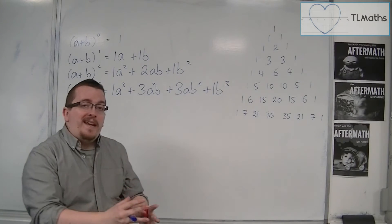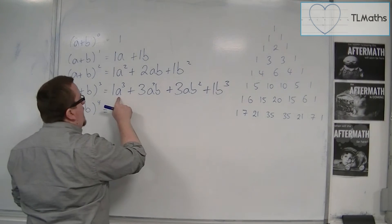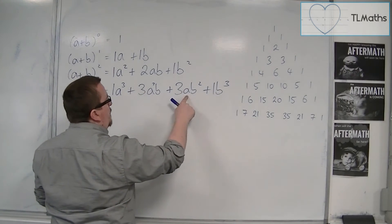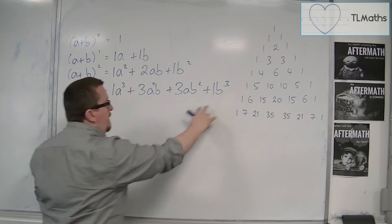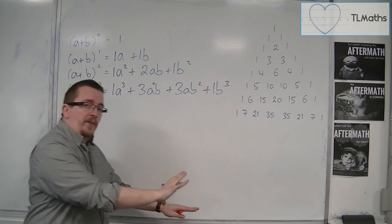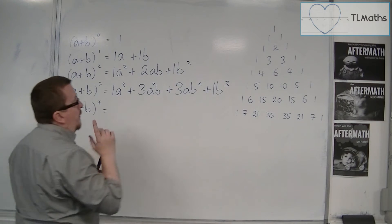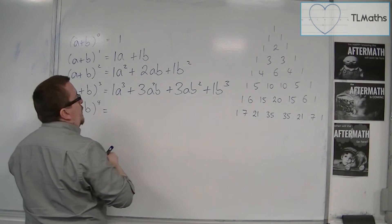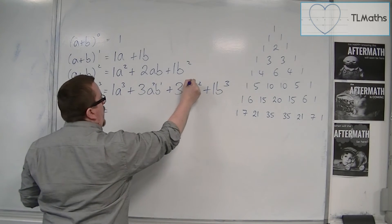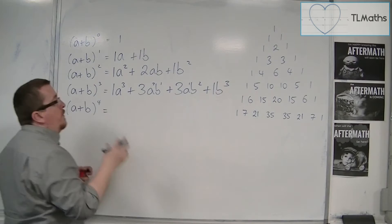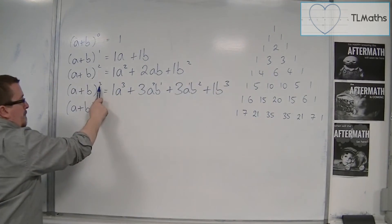You also need to spot the other patterns going on here. The a's are reducing in power as we go along, and the b's are increasing in power. On top of that, the powers of each element — for example, 3 and 0, 2 and 1, 1 and 2, 0 and 3 — each time add up to 3, which is the overall exponent. That is also very important.